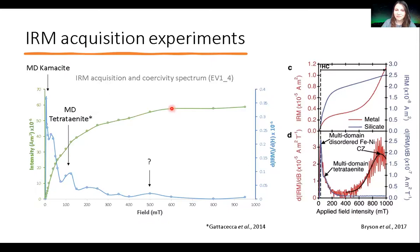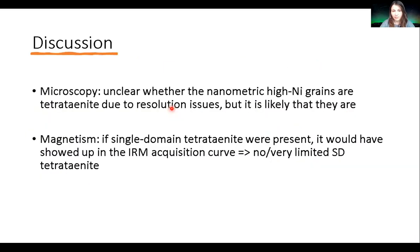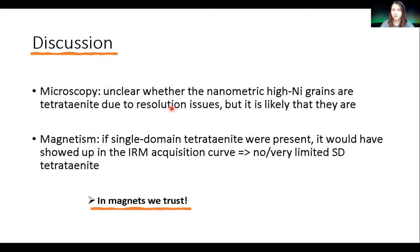In any case, there is no or very limited single-domain tetrataenite here. For reference, here's what the IRM curve would look like if single-domain tetrataenite were present — it would start jumping up at 600 millitesla — whereas mine, if anything, saturates below 600 millitesla. The conclusion is that we have little or no single-domain tetrataenite present, which is a bit strange given the microscopy results. In magnets we trust when it comes to tetrataenite identification.